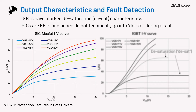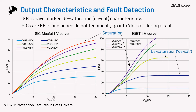The various regions of operation are shown for both technologies, illustrating the difference in the region of operation for the two devices. This is also about naming convention, since the saturation region of the IGBT is analogous to the ohmic or triode region of the MOSFET.